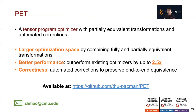To summarize, PAT is a tensor program optimizer with partial equivalent transformations and automated corrections, enabling a larger optimization space, better runtime performance, and stronger correctness guarantees. All source code of PAT is publicly available online. With that, I would like to conclude my talk, and I'm happy to take any questions. Thank you for listening.